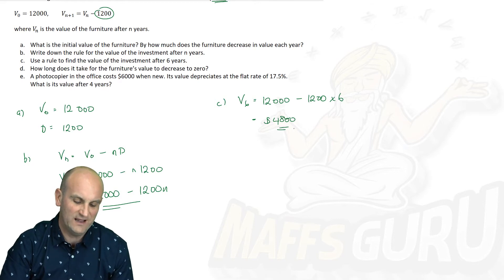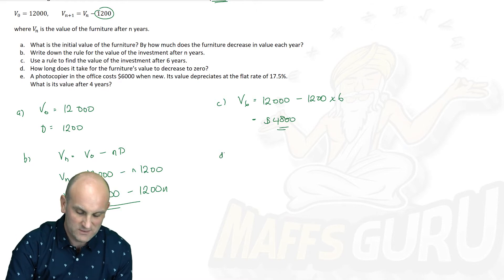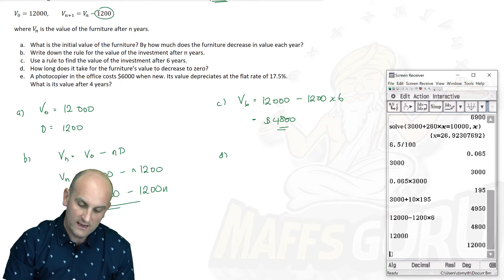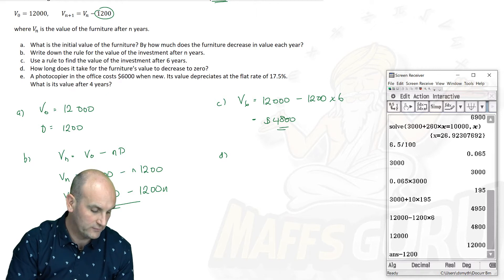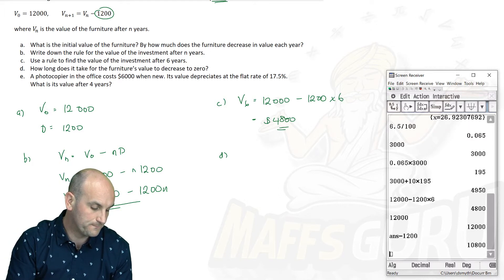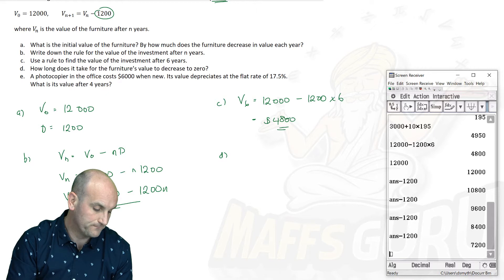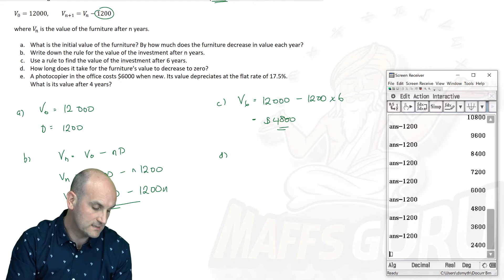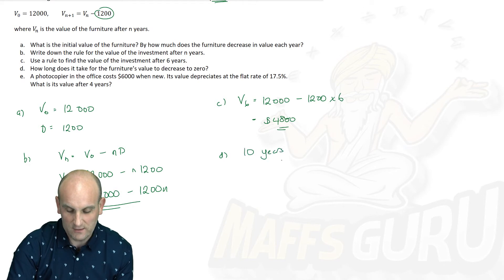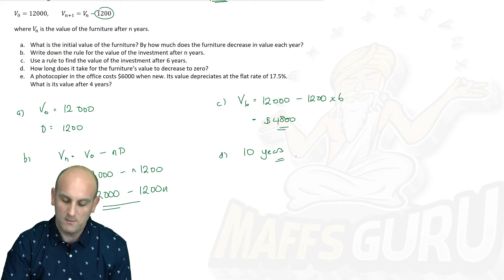Part D: how long does it take for the furniture's value to decrease to zero? Using the calculator — starting with $12,000 and taking away $1,200 per year — after 10 years this thing will depreciate to a value of zero. I'm really sorry about my calculator — I know why it's going so slow today, probably because it's linked up to my computer.